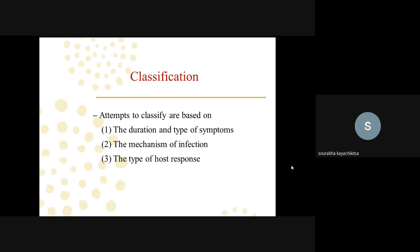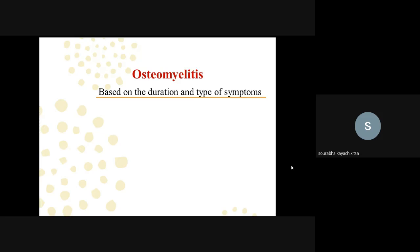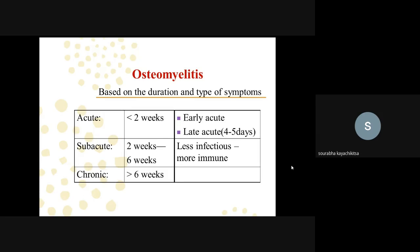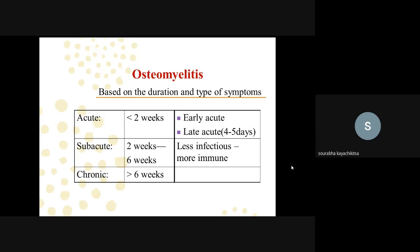Classification of osteomyelitis is based on duration and type of symptom, mechanism of infection, and type of host response. Based on duration: acute is less than two weeks — early acute is within four to five days, late acute is up to two weeks. Subacute is two weeks to six weeks, with less infection and more immunity. Chronic is after six weeks.